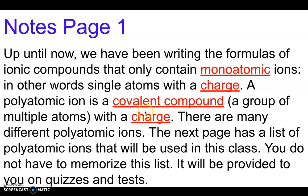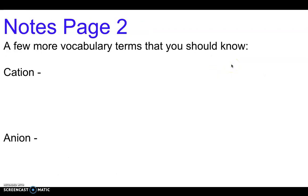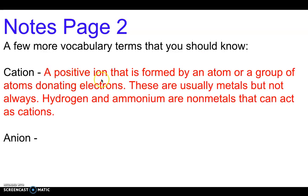Here's the list. You can see most of these polyatomic ions are anions, a couple of them are cations. Let's talk about what those two words mean. A cation is a positive ion that's formed by an atom or group of atoms donating electrons. These are usually metals but not always. Hydrogen and ammonium are non-metals that can act as cations. Anytime you've got an atom or group of atoms that has donated electrons, they'll have a positive charge and we call that a cation.